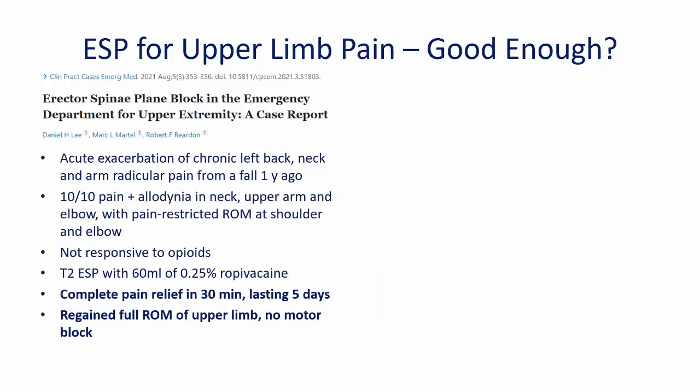As with other applications for the ESP block, its application in painful conditions of the upper limb is spreading beyond the operating room and pain clinic. A case report from our emergency department colleagues reported an impressive relief of severe upper limb pain radiating from the neck, presumed to be neurogenic in nature. As with the case we first reported, a T2 ESP block not only relieved the pain but preserved motor function, allowing the patient to regain full unrestricted range of motion in their shoulder and elbow.